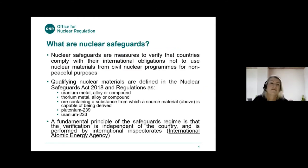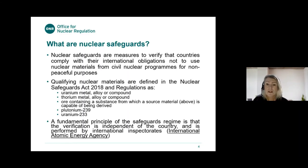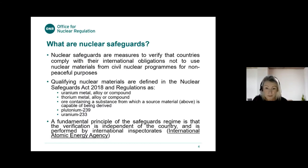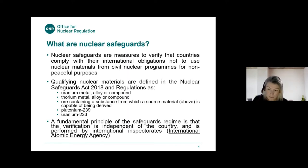Nuclear safeguards are measures to verify that countries comply with their international obligations not to use nuclear materials for civil nuclear programmes for non-peaceful purposes. Qualified nuclear materials are defined in the Nuclear Safeguards Act 2018 and regulations as uranium metal, alloy or compound; thorium metal, alloy or compound — all containing a substance from which a source material is capable of being derived — and plutonium-239 or uranium-233. A fundamental principle is that the verification is independent of the country and is performed by the international inspectorates, i.e. the International Atomic Energy Agency.